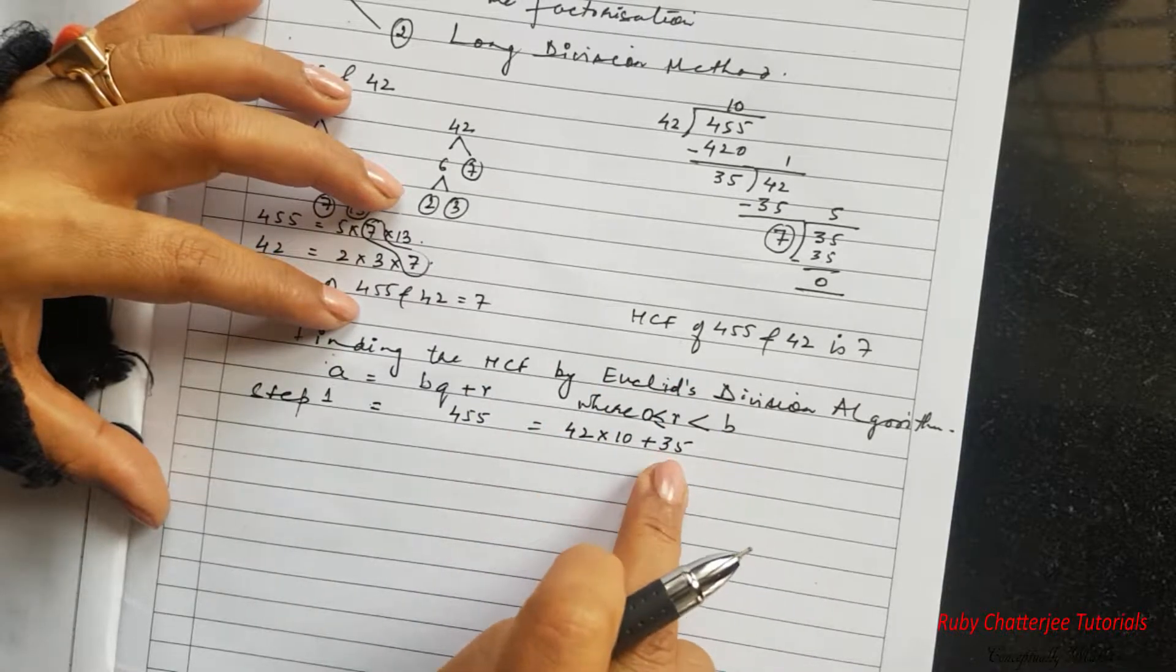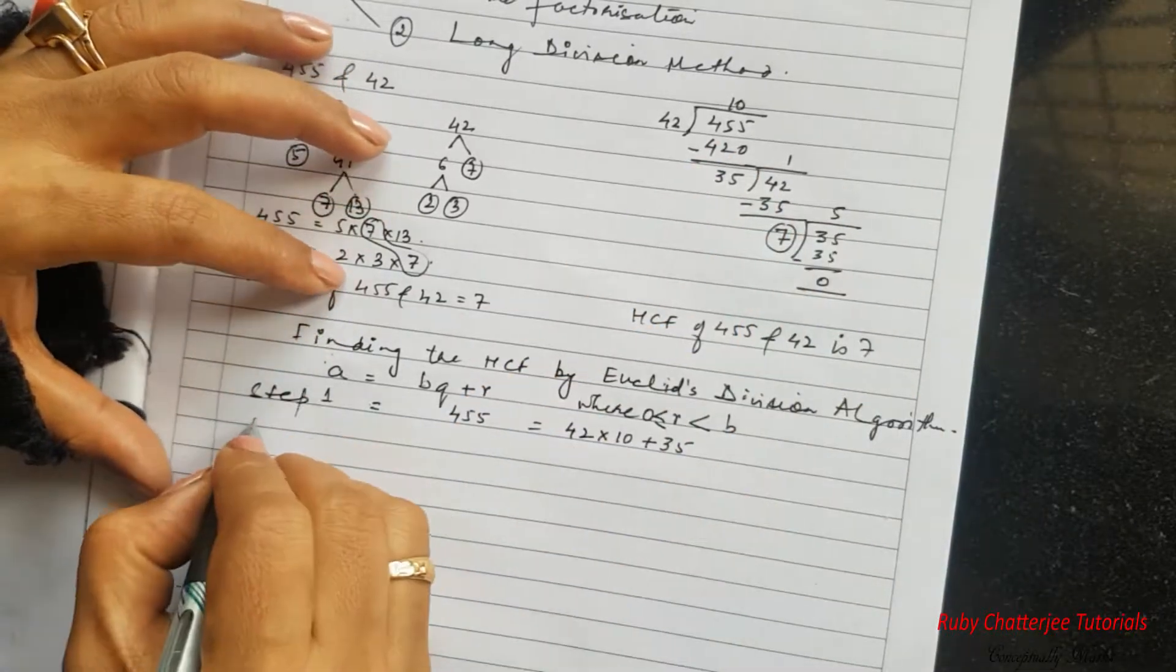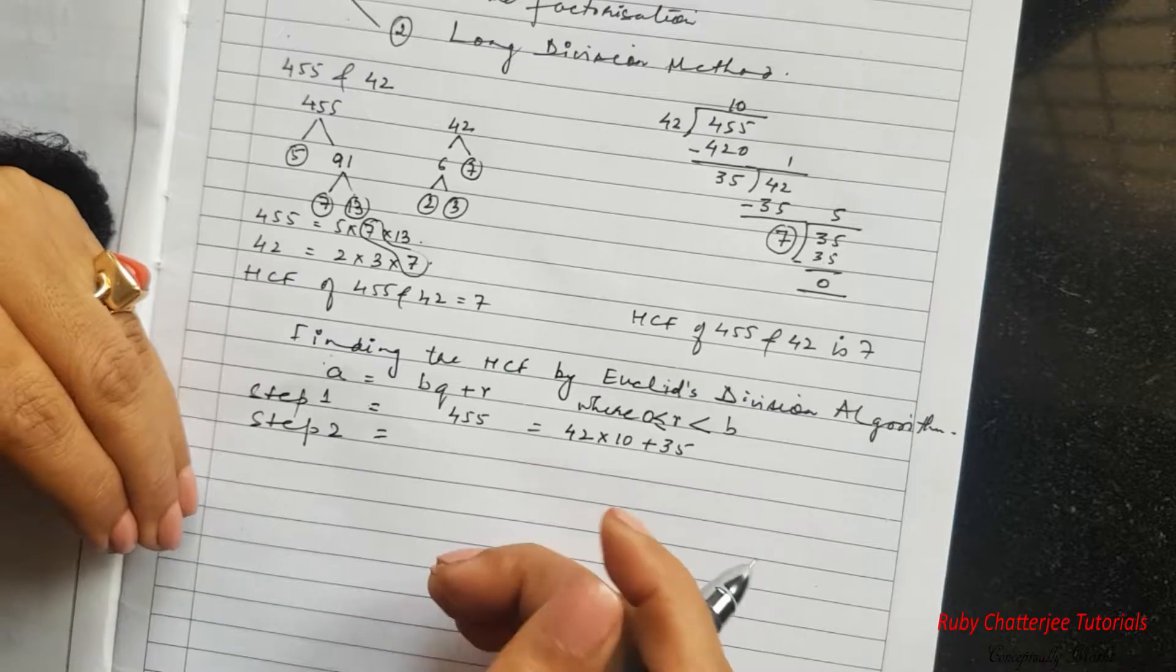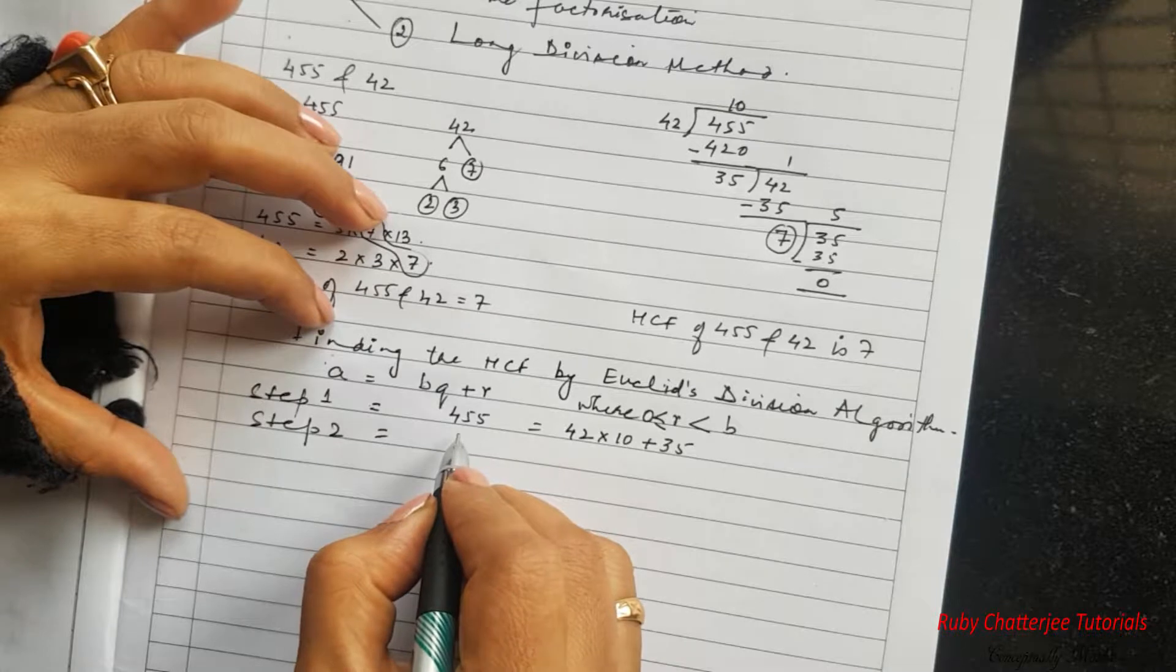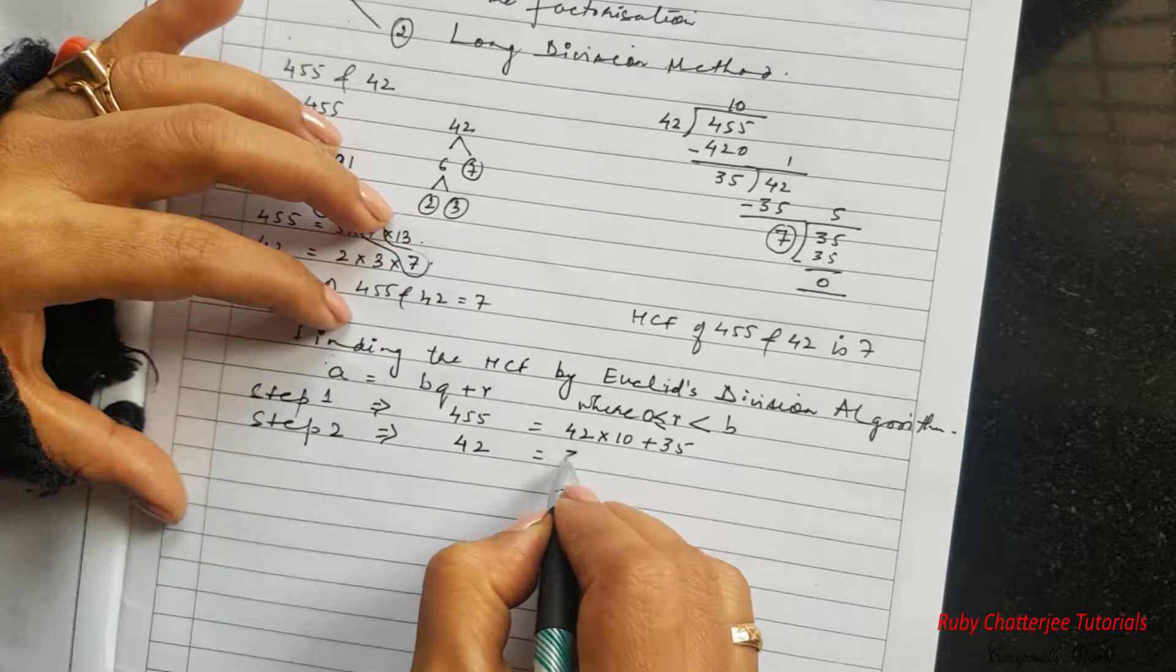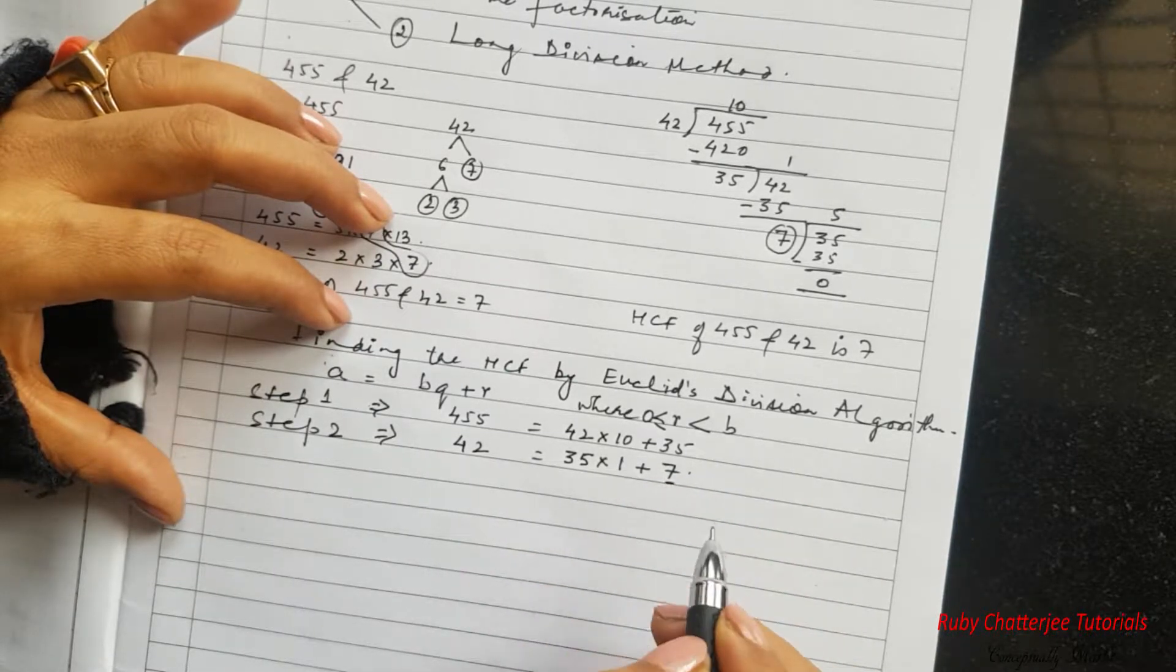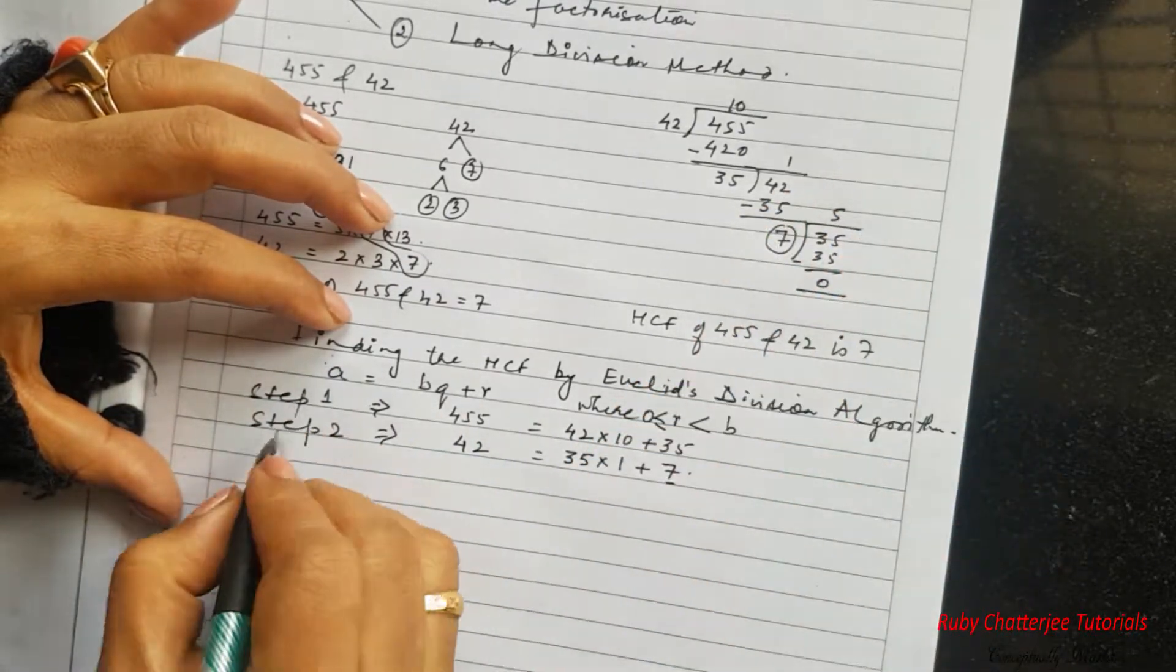So this is the first step. Now in this step our remainder is still not 0, so we will continue it further to the second step. So our step 2, now you can see that slowly and gradually as we are repeating the steps again and again we are actually reducing. So step 2 will be 42 is equal to the divisor 35 into the quotient that is 1 plus remainder that is 7. Again the remainder is still not 0, so we get back to the procedure step once more. So we repeat the step of Euclid's Lemma.